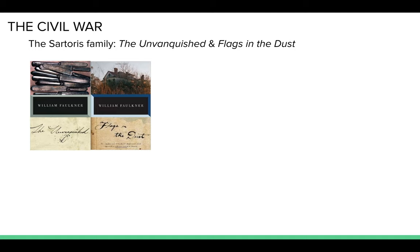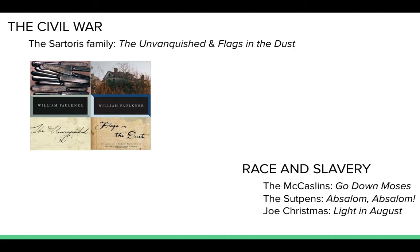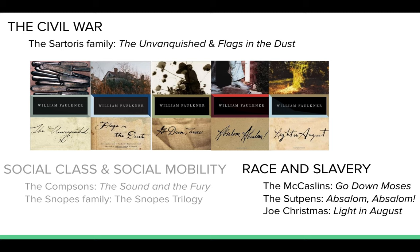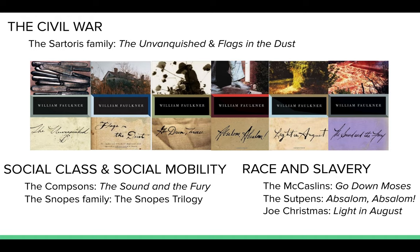The Civil War and its long-term impact and ramifications on the old families of the South is explored through the Sartoris family in Flags in the Dust and The Unvanquished. Race and the consequences of slavery are explored through the McCaslin family in Go Down, Moses and the Sutpen family in Absalom, Absalom!, and the enigmatic Joe Christmas in Light in August. Finally, the question of social class and social mobility serves as the focus of several novels, whether we're looking at the fall of the Compson family in The Sound and the Fury — one of my personal faves — or the rise of the once poor Snopes family in Faulkner's late-career Snopes trilogy.